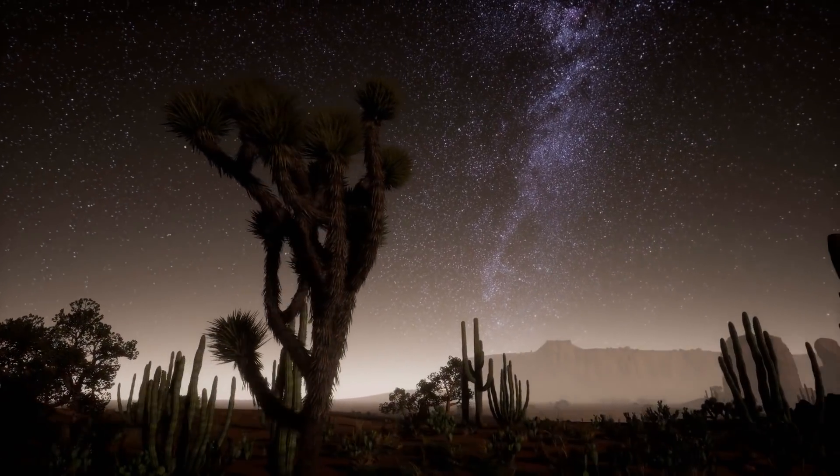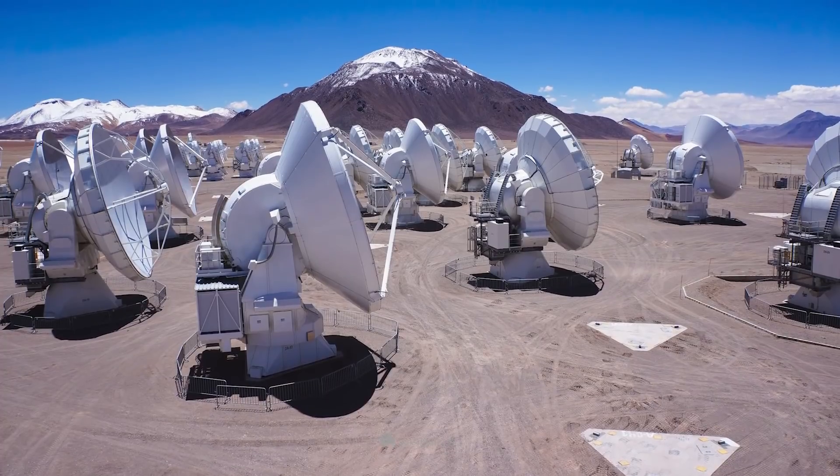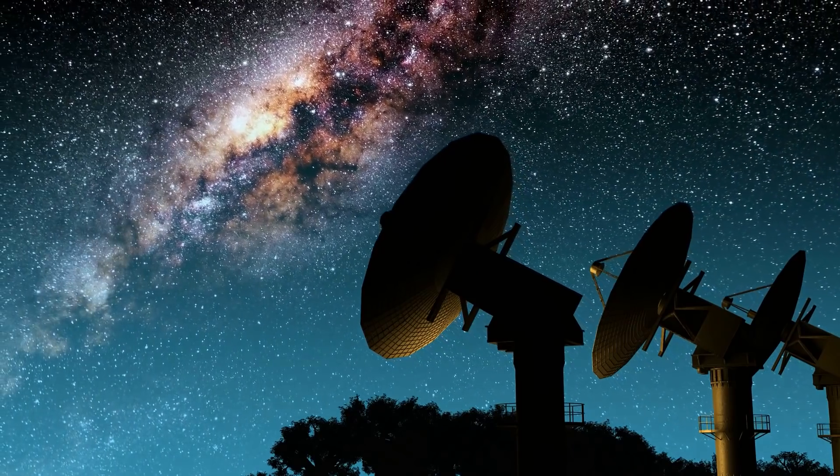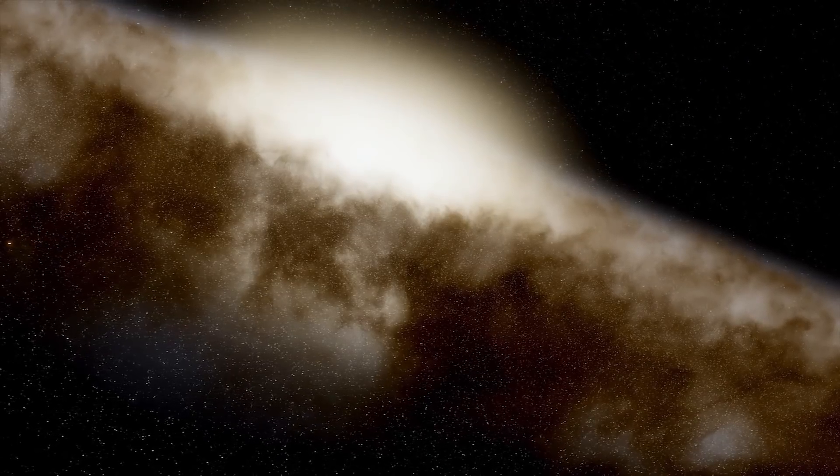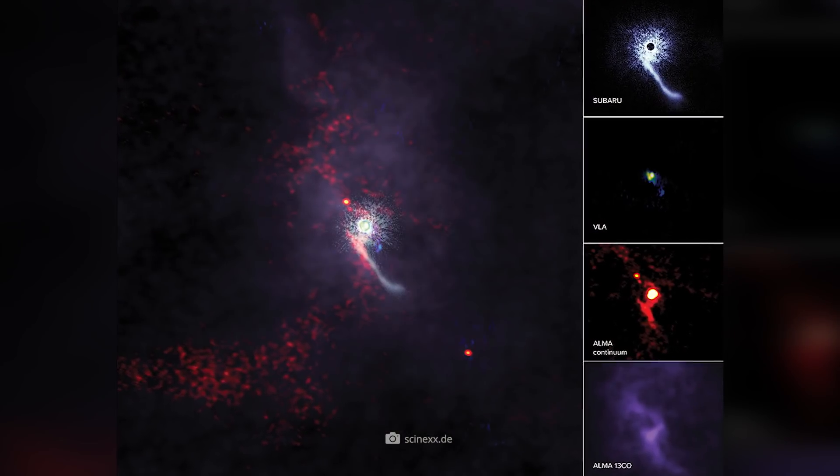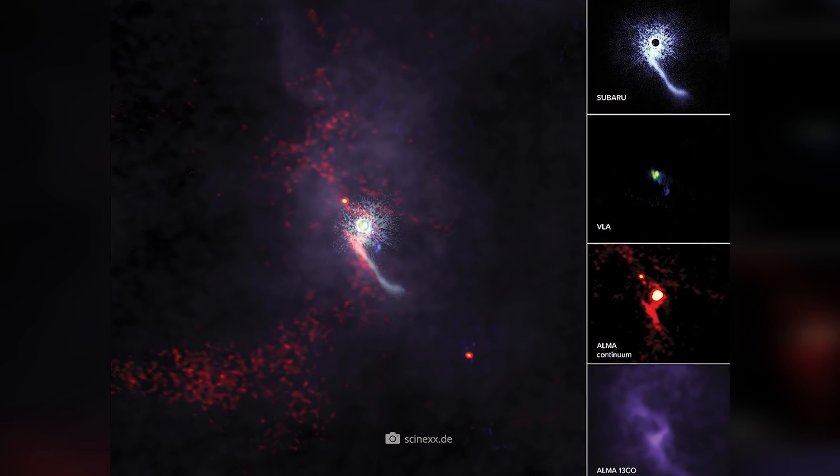However, recent analysis by Canadian researchers using the ALMA and Very Large Array radio telescopes has revealed a previously overlooked detail: a small point of light about 4,700 astronomical units away, located exactly on the extended axis of the mysterious outflow.